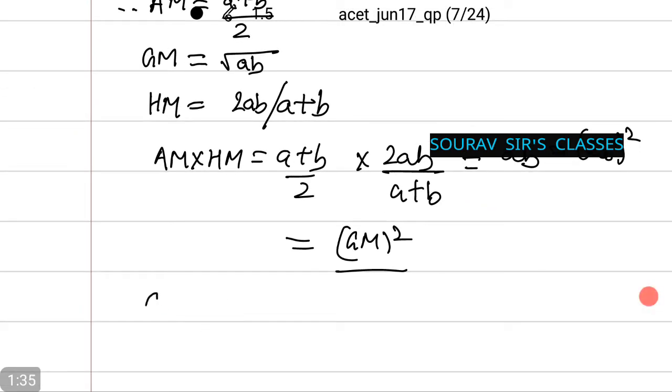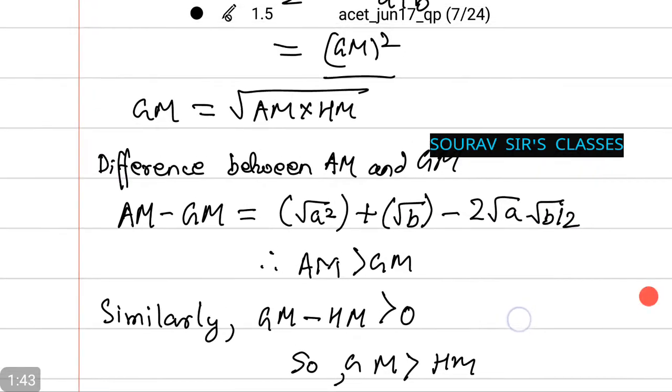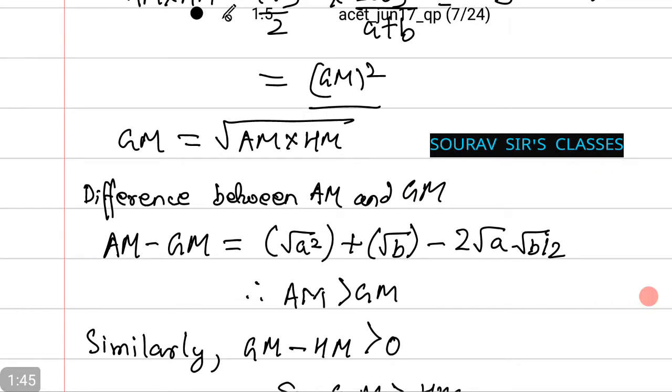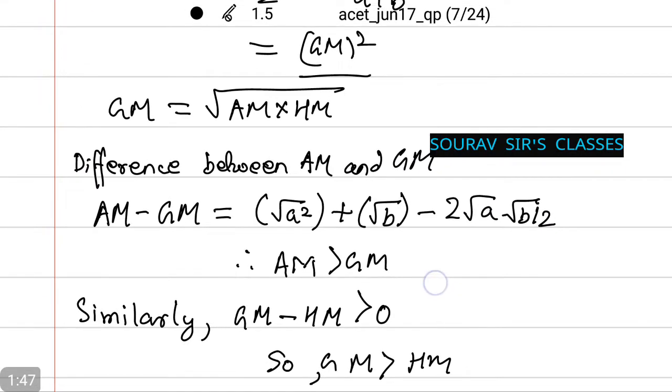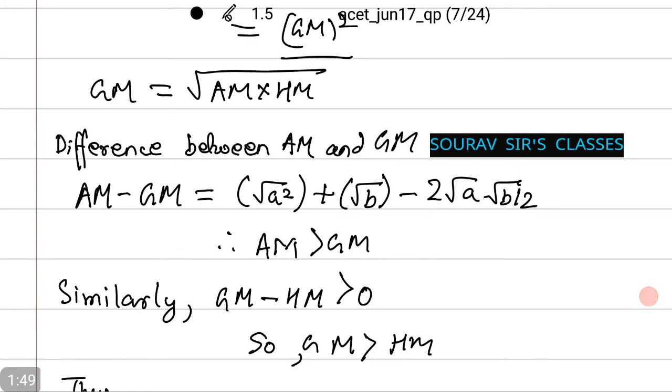Therefore, GM equals root AM into HM. Thus, now we calculate the difference between arithmetic mean and geometric mean, and it comes to root over a squared plus root b minus 2 root a into root b by 2, which is greater than zero.